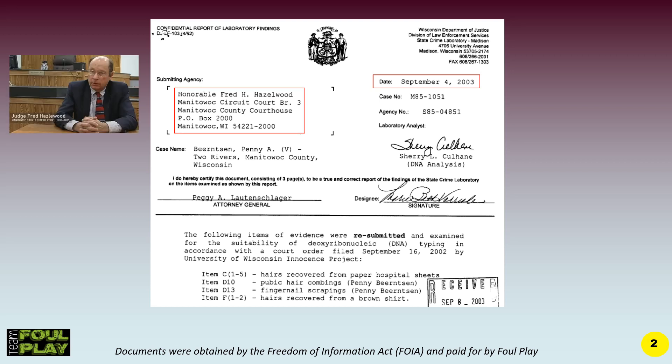The submitting agency in this particular case was the Honourable Fred Hazelwood. The reason why this is so interesting is that Judge Hazelwood had denied Stephen Avery's freedom in 1996. There was some DNA analysis done back in 1996, but unfortunately Judge Hazelwood was not convinced of the results, and as a result, Stephen Avery went back to prison in 1996.